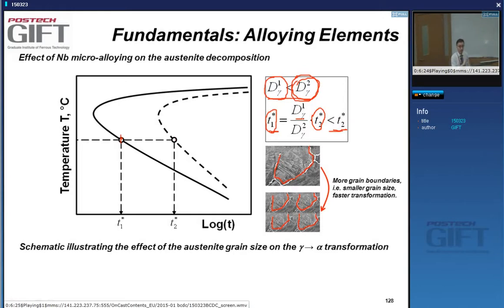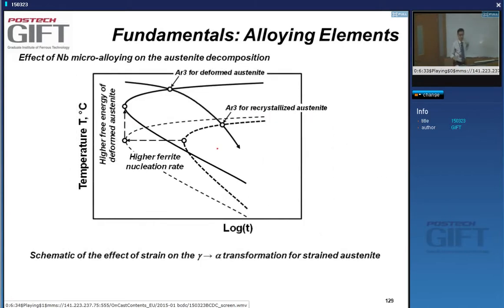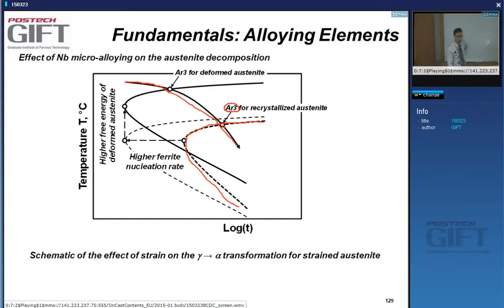The same applies to deformation. In a TTT diagram, the C curve for transformation without deformation is at a certain position. If I cool at a particular rate, the point where transformation starts is the AR3 temperature for that cooling rate. If the transformation starts from deformed austenite, it will start earlier and at higher temperatures. There are two effects: a kinetic effect and a thermodynamic effect.